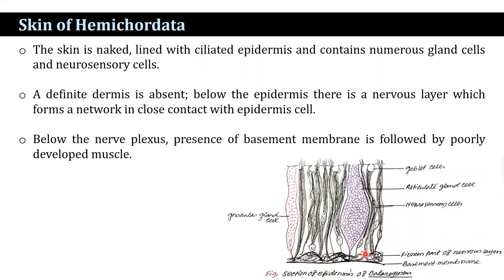A definite dermis is absent. Below the epidermis, there is a nervous layer that forms a network in close contact with the epidermis cells. Below the nerve plexus, there is a prominent basement membrane followed by muscles, which are very poorly developed.